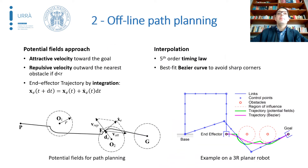The offline path planning algorithm is based on the potential fields method, where a combination of attractive and repulsive velocity vectors are generated by the goal point and the obstacles respectively, and then applied to the end effector of the manipulator. The trajectory is then obtained by integration and interpolated with a fifth-order polynomial timing law.